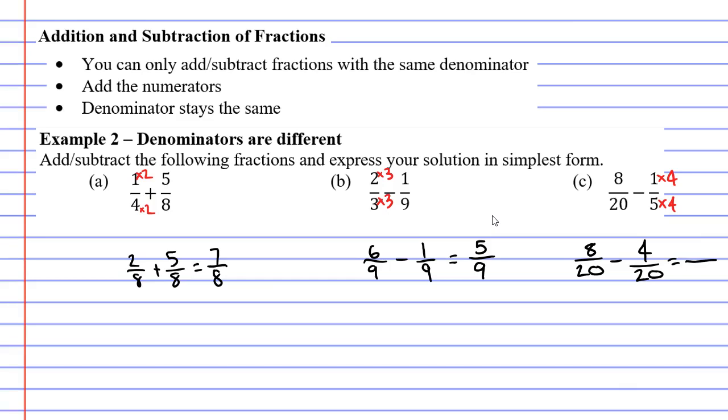The denominator stays the same it stays as twenty and eight minus four gives me a numerator of four. Now I did want you to also put your solutions in simplest form so I'm going to halve this fraction half of four is two and half of twenty is ten and I can halve it again half of two is one and half of ten is five.